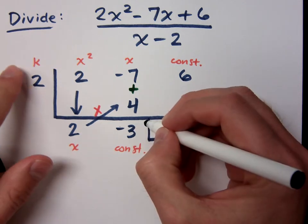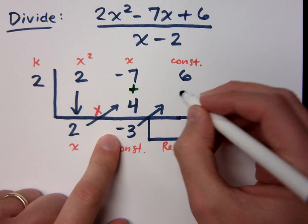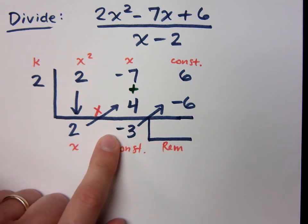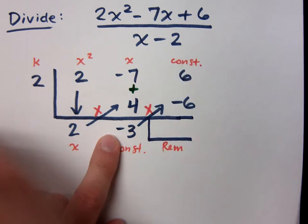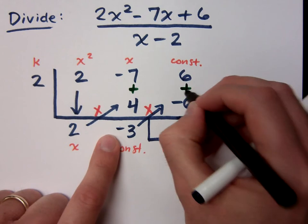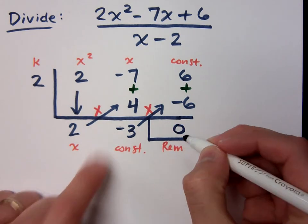Remember, it's multiplying times the k. 2 times negative 3 is what? So I multiplied here, I add here, and I get a remainder of 0.